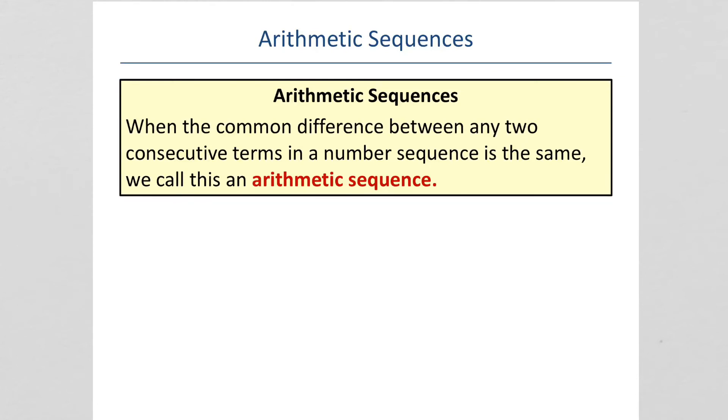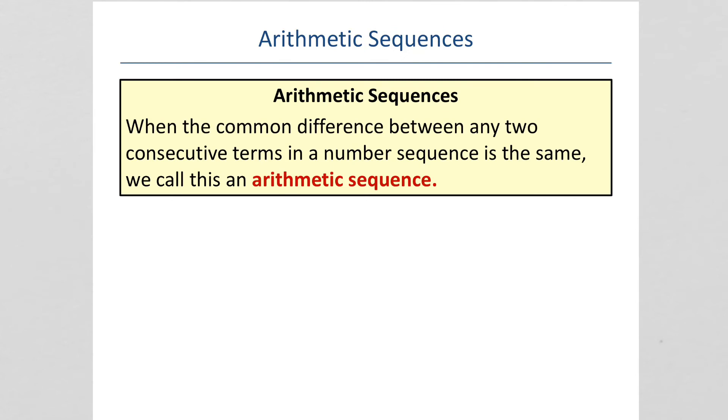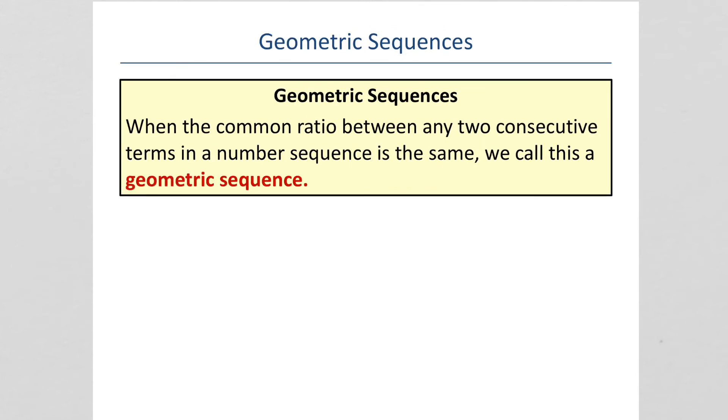When the common difference between any two terms in a number sequence is the same, we call it an arithmetic sequence. So that first one there, where we were adding each time, that was an arithmetic sequence. And then this one, when we were multiplying each time, that's a geometric sequence. So an arithmetic, you either add or subtract the same amount each time. A geometric, you multiply or divide the same amount each time.